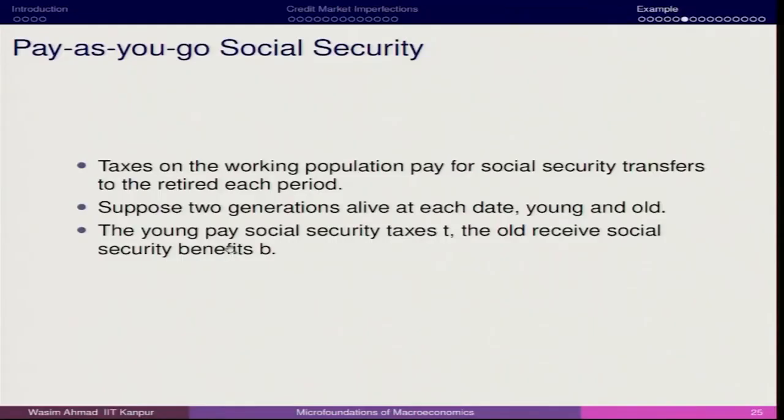Now we are going to understand new tools and concepts in the field of social security. In macroeconomics, we often talk about what we call the pay-as-you-go scheme. There are two types of schemes in social security. One is called pay-as-you-go, which means that when you are young you pay the tax and when you are old you get the benefit. The second scheme is called mandatory requirement — in mandatory requirement, individuals are supposed to save a certain amount of money as per government instructions as contribution towards social security, and once they retire this money will be used for their welfare.